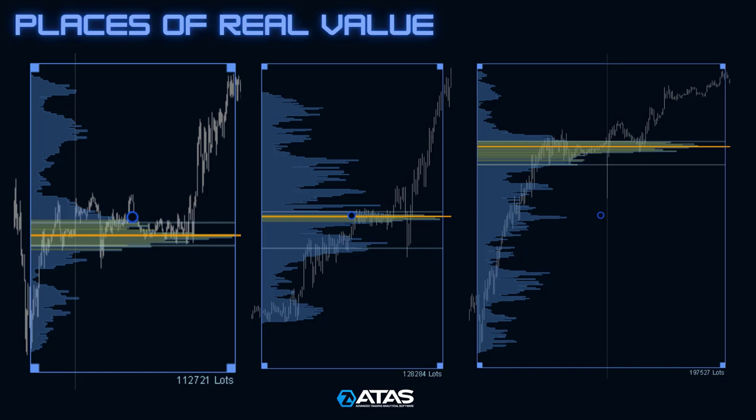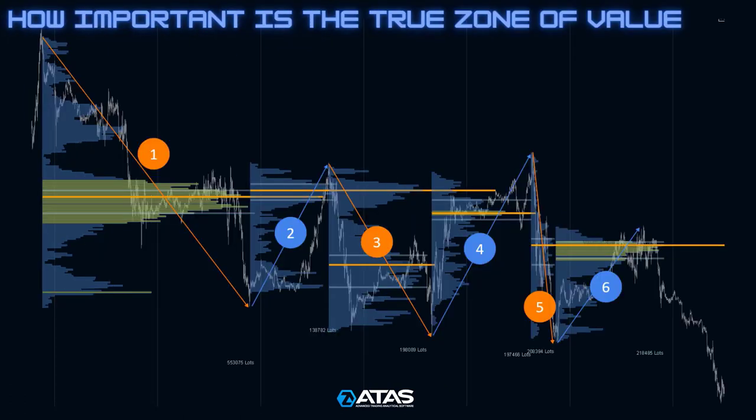Unlike the range of true value, the current price can be manipulated by false breakouts that will mislead traders. It is also important to understand the significance attributed to each zone by both buyers and sellers. By comparing waves to each other and comparing volume spikes within one wave, you can determine the price levels where the most active battles took place.